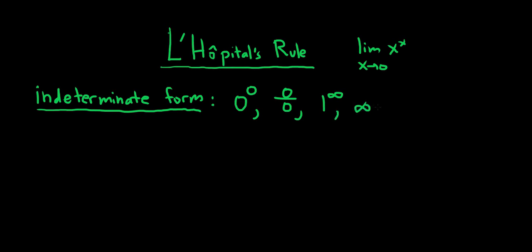Another indeterminate form would be 0 over 0. Another one would be 1 to the infinity. All of these are indeterminate forms: infinity minus infinity, infinity over infinity, 0 times infinity, and infinity to the 0. So all of these are examples of indeterminate forms.